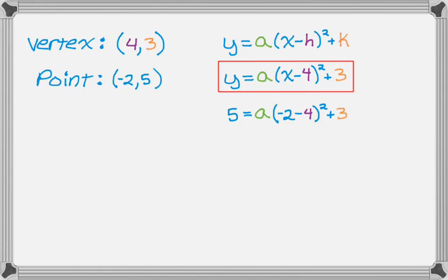So in the next step, I'm going to subtract 3 from both sides to get 2 equals. And then negative 2 minus 4 is negative 6, and then squared. So 2 equals a, the quantity negative 6 squared. So those parentheses are really important because when you square a negative, it becomes a positive. So in the next step, 2 equals 36a, which means a is 2 divided by 36, but then that simplifies, so I should probably do that.